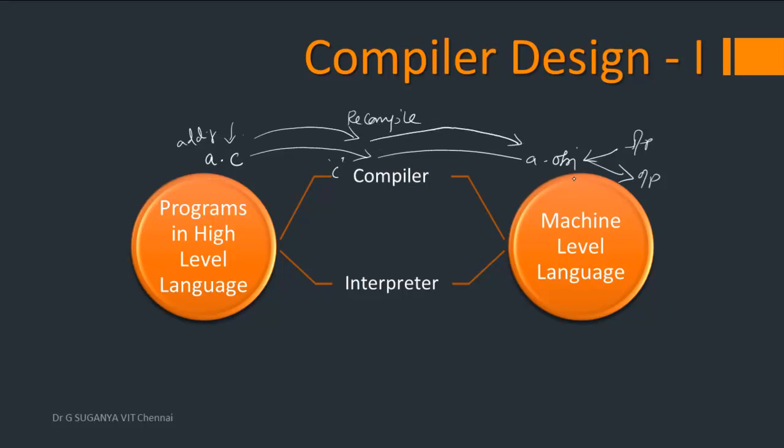If you are adding anything to a.c, then again you have to recompile. Because every time only this a.obj is what gets executed rather than a.c. So this will create another updated a.obj to which if you give input it will give you output. So this C compiler, C is a compiled language which is working on this principle.